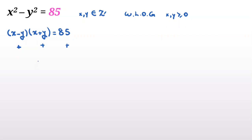Also, x plus y is greater than or equal to x minus y, since y is non-negative. Now let's consider all factor cases. 85 equals 1 times 85, and also 85 equals 5 times 17. So we have only these two cases to analyze.